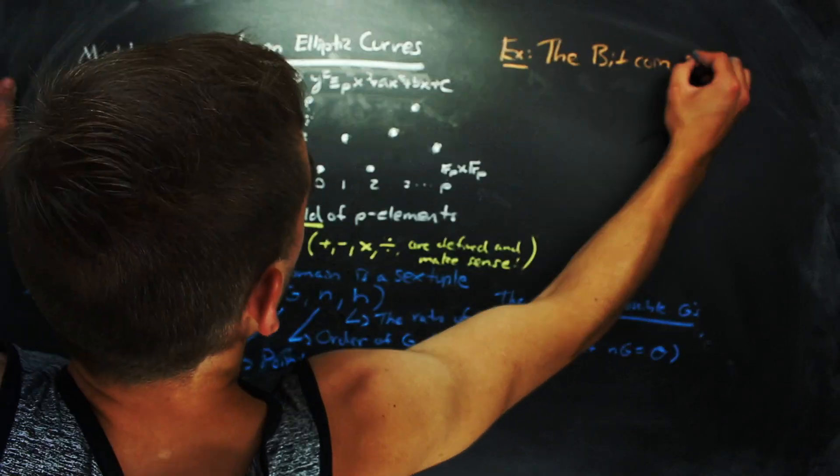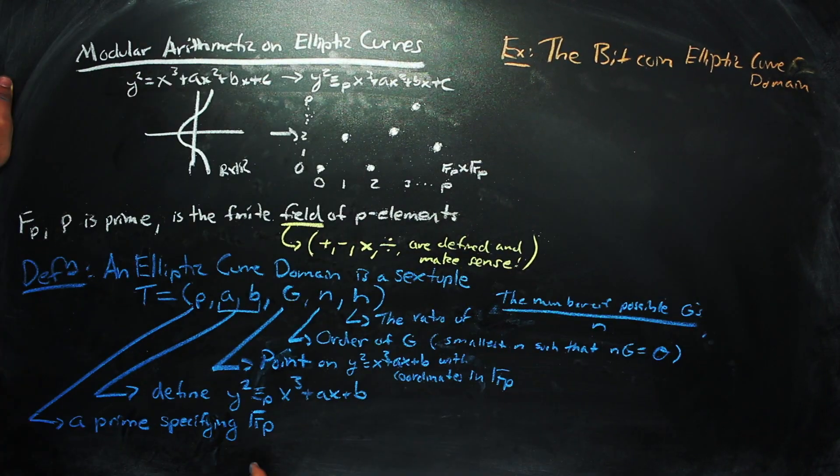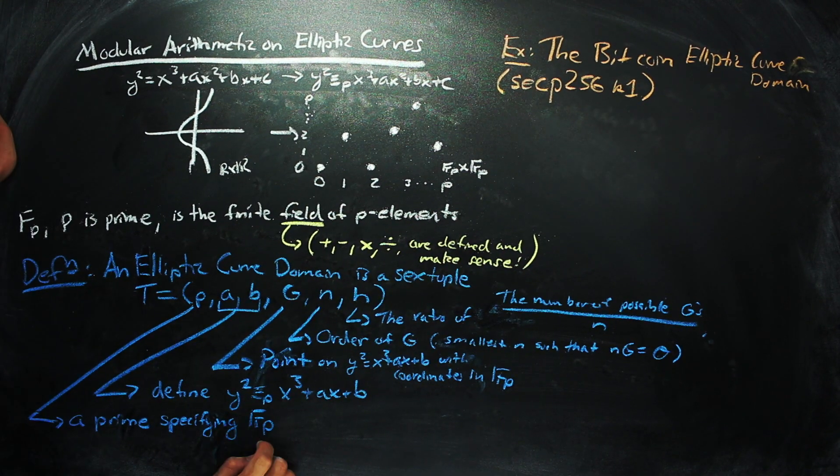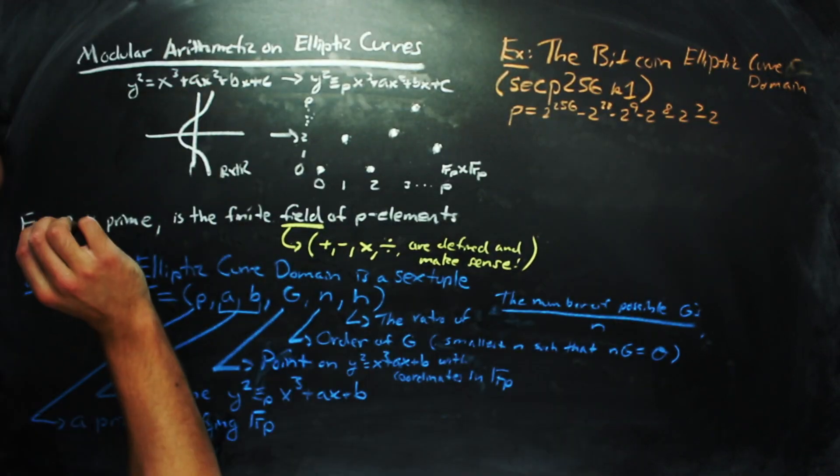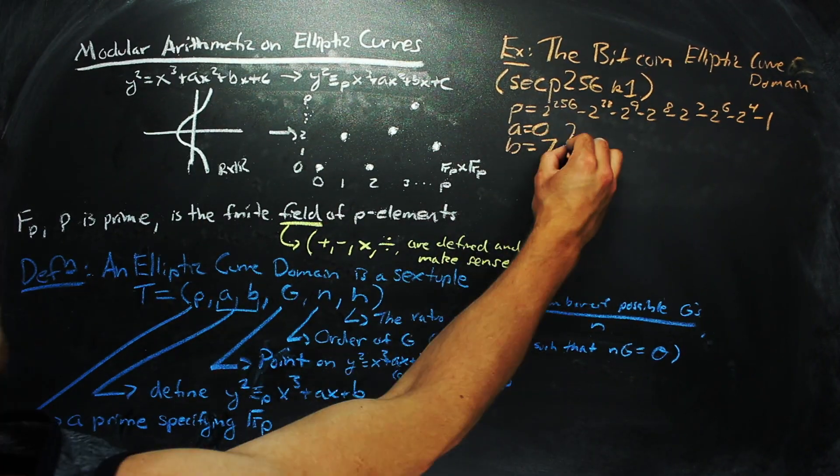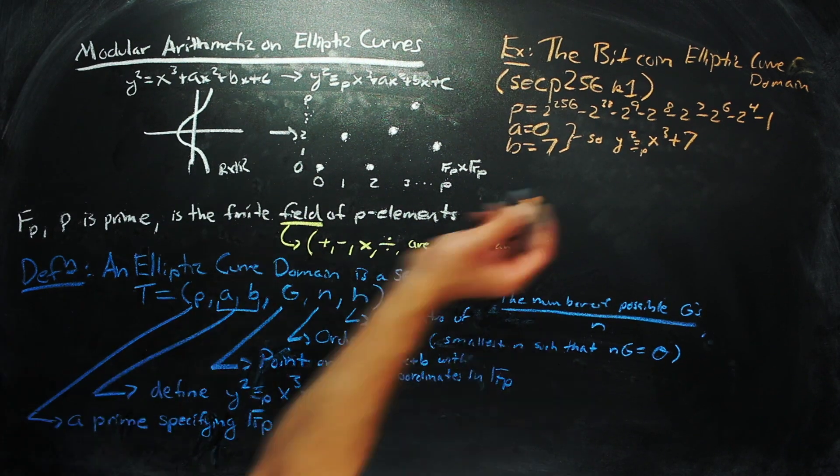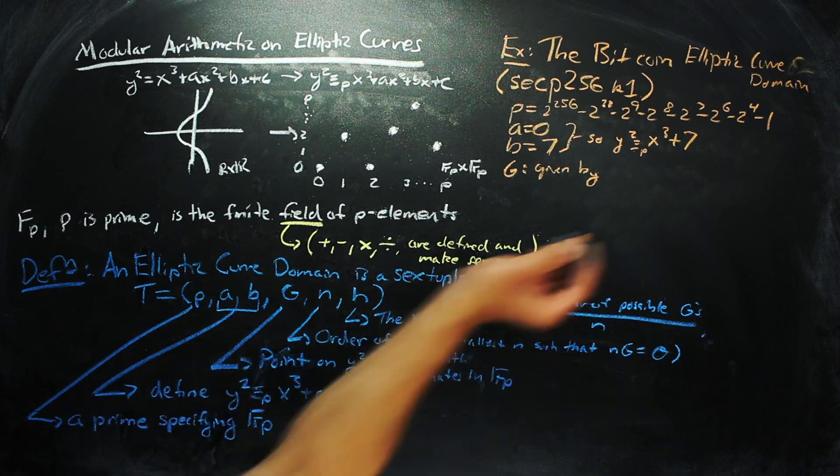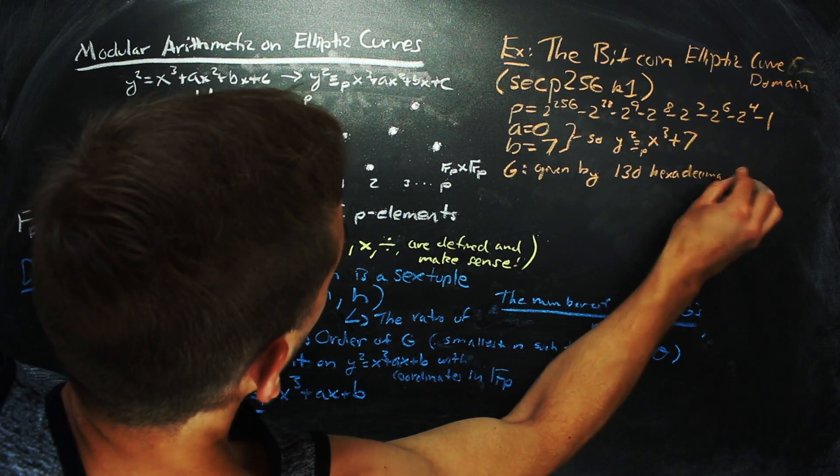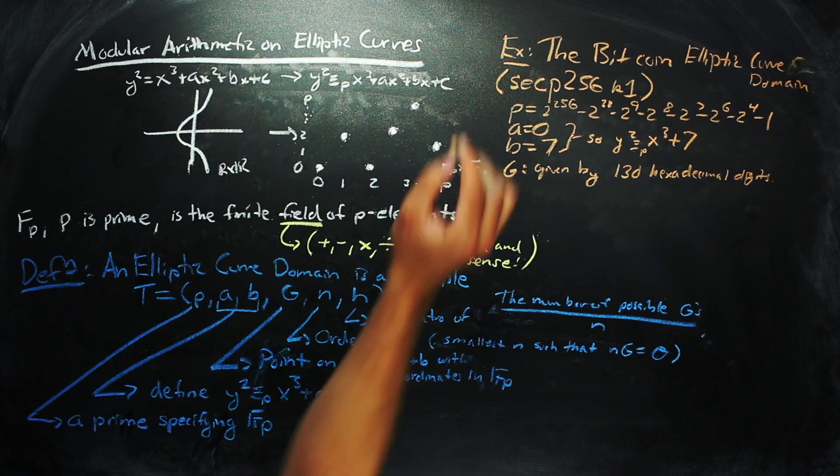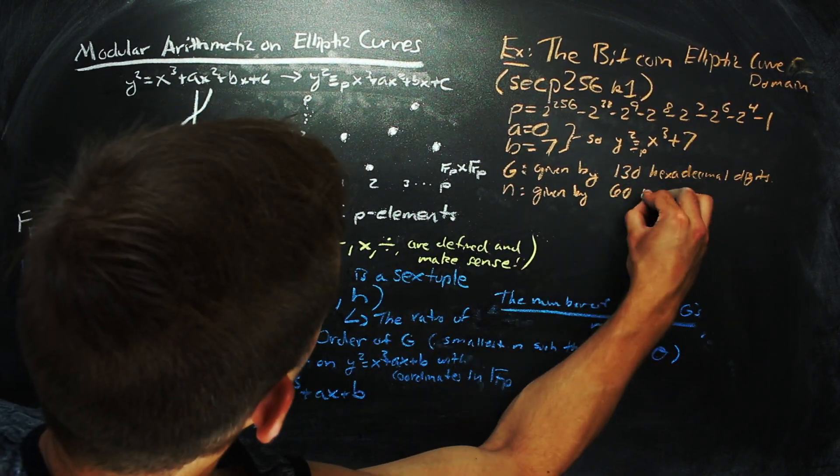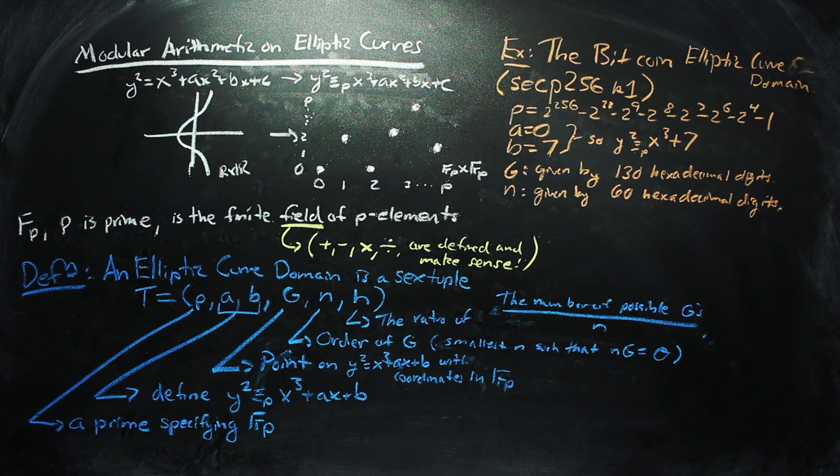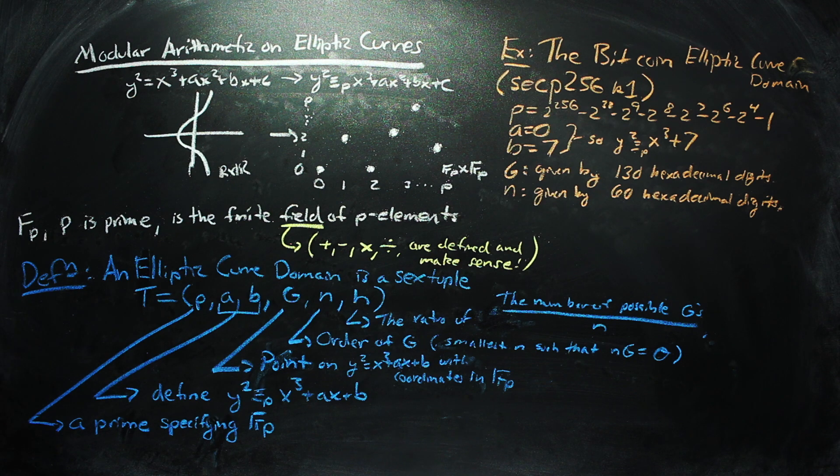Bitcoin uses the elliptic curve domain with p is equal to 2 to the 256th minus 2 to the 32nd minus 2 to the 9th minus 2 to the 8th minus 2 to the 7th minus 2 to the 6th minus 2 to the 4th minus 1, a equal to 0, and b equal to 7. For this curve, the standards for efficient cryptography present a base point g with a non-compressed representation in 130 hexadecimal digits. And this base point has an order that is represented by 64 hexadecimal digits. So it's safe to assume that these are pretty large numbers at play.